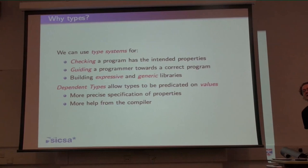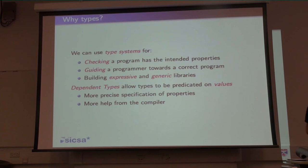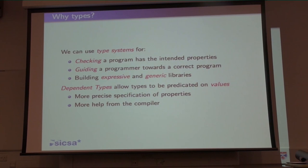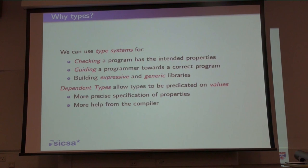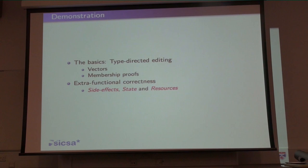Type systems can help guide you towards the correct program if you say what the type is in advance. And one example I'm going to show you towards the end is using the type system to help you get much more expressive and generic libraries as well as correct programs. Now, dependent types — that was in the title, but I haven't told you what they are yet. Dependent types mean, in general, that types can be predicated on values. For example, you can have a list of length five rather than just a list. This means we get the ability to give more precise specifications — we can say more precisely what a program is supposed to do, and hopefully get more help from the compiler.